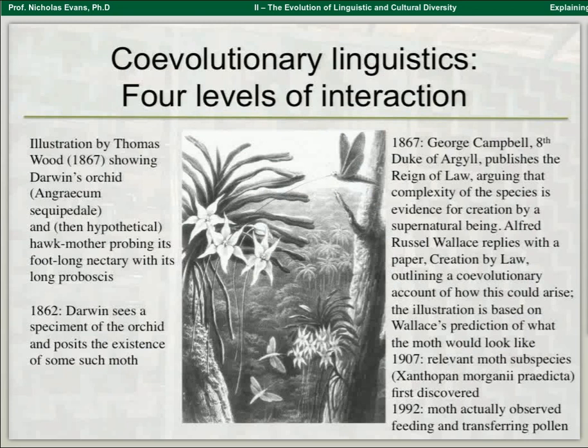Under the title of co-evolutionary linguistics, I want to go through four levels of interaction. Many of you will know this very interesting engraving made in 1867. Here we have what was then a known orchid — Angraecum sesquipedale — with an incredibly long nectary, nearly a foot long, with nectar sitting at the bottom.